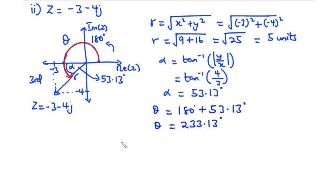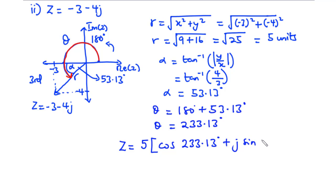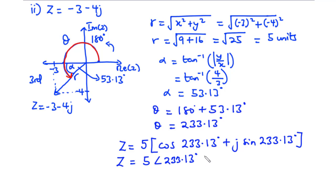Therefore, the polar representation of the complex number negative 3 minus 4j is: 5 times (cos 233.13° plus j sin 233.13°), which can simply be expressed as 5∠233.13°. That's it for today's video — thanks for watching and see you in the next video, bye bye.